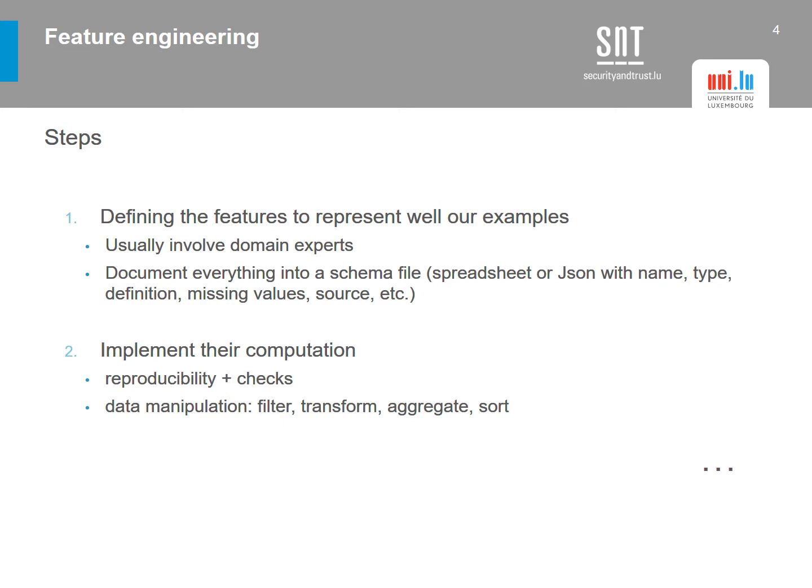Once we know what features to use and have consulted the experts, the next step is to implement them. This is where reproducibility matters — we will need to run and recheck the computations. The computations generally involve data manipulation, which is of four types: filtering (selecting only some data), transforming (transforming columns to make data consistent, for example converting all temperatures to Celsius or Fahrenheit), aggregating, and sorting.